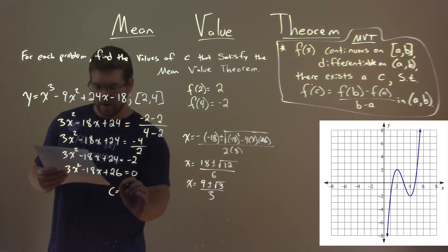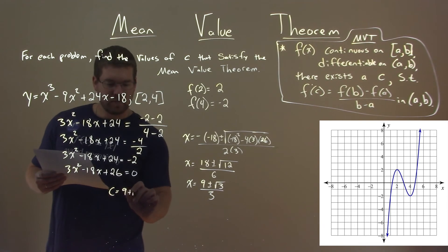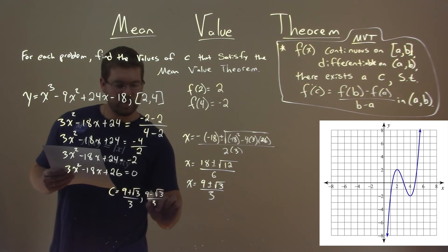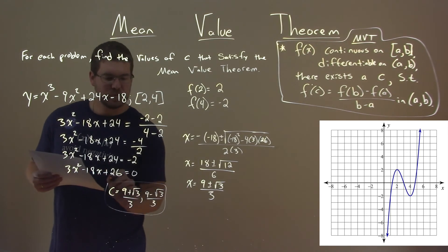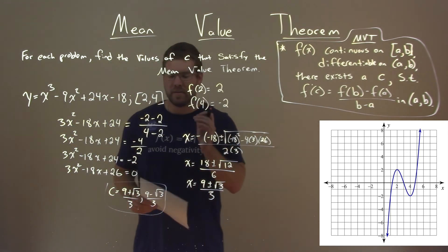So, our two c values we can label here are 9 plus the square root of 3 over 3, and 9 minus the square root of 3 over 3. And these are the two c values that satisfy the Mean Value Theorem.